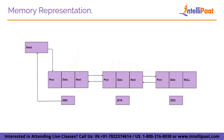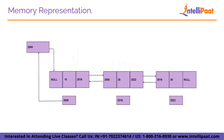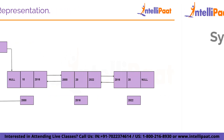Let's take an example and understand memory representation in a doubly linked list. Consider three elements to be inserted in the list, where each node contains the data part and two address parts for the previous and next nodes. The address of the first node is stored in a special pointer called 'head'. The next of the first node contains address 2016 (address of second node); its previous is null since there is no node before it. The previous of the second node contains 2000 and its next contains 2022 (address of third node). The previous of the third node contains 2016 and its next is null since it is the last node. The data values are 10, 20, and 30 for the first, second, and third nodes respectively.